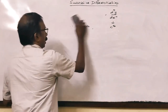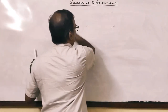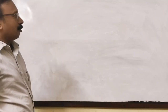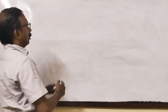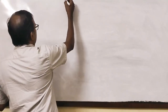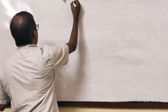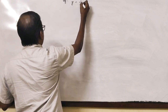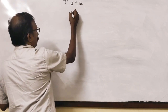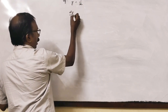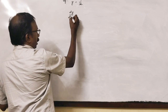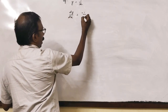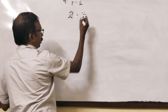Let us discuss with some examples. If y equals 1/x, the first derivative dy/dx is equal to minus 1/x². The second derivative d²y/dx² is then obtained by differentiating minus 1/x².